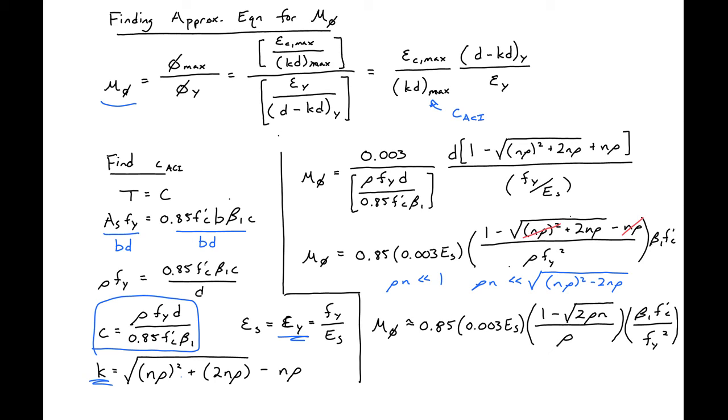This will be our general relationship to find our curvature ductility. We can see a couple things. First, if we want to increase our curvature ductility, we can decrease our reinforcement ratio.